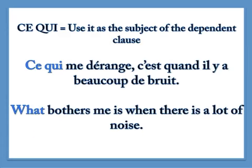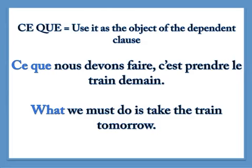Here's another one with ce qui: Ce qui me dérange, c'est quand il y a beaucoup de bruit — 'What bothers me is when there's a lot of noise.' You can put ce qui, ce que, or ce dont at the beginning of the sentence — it's just a way to turn the sentence around. Here's another example putting it at the beginning using ce que: Ce que nous devons faire, c'est prendre le train demain — 'What we need to do is take the train tomorrow.'